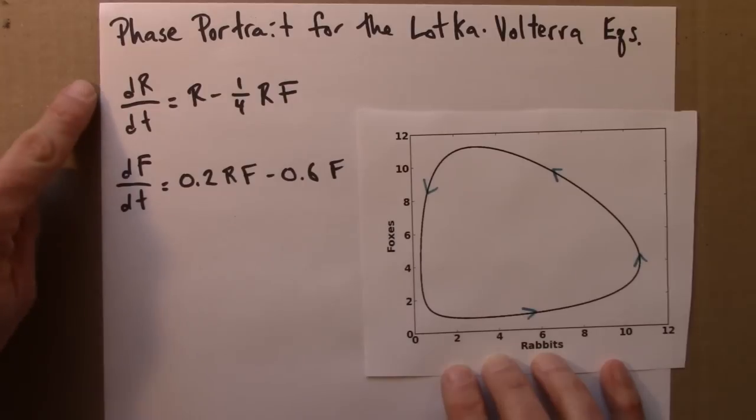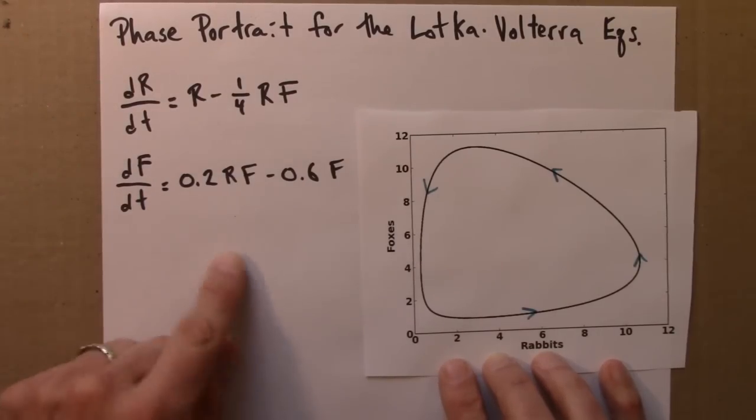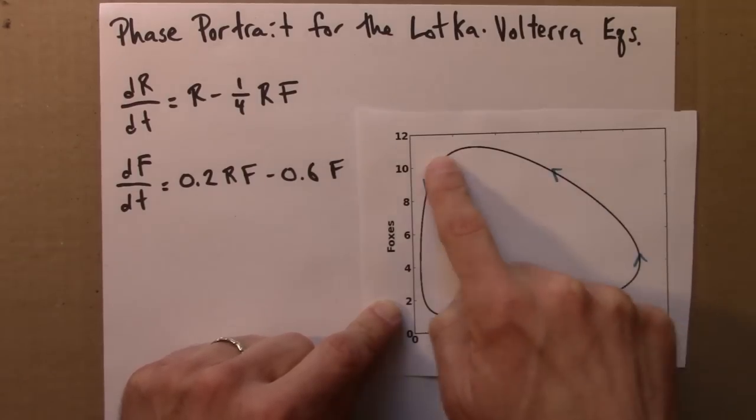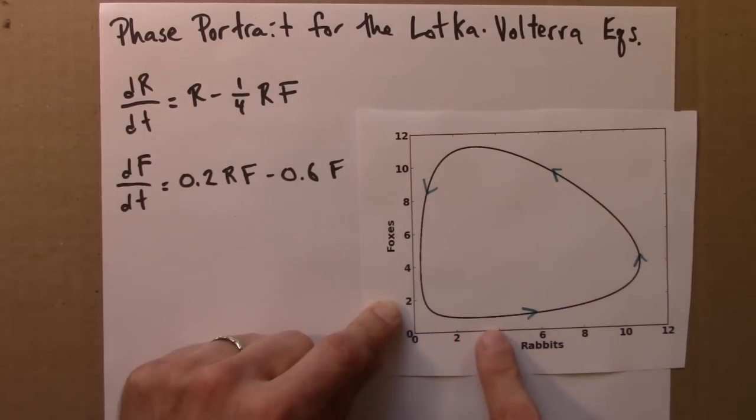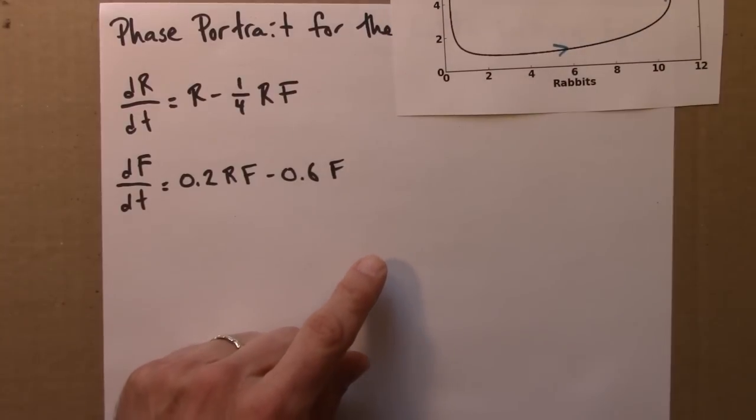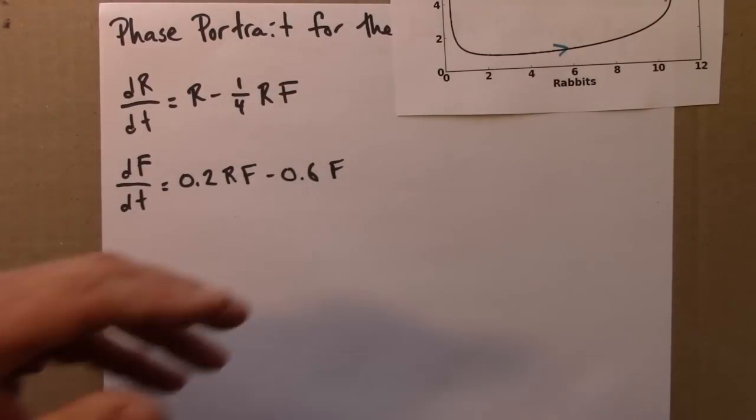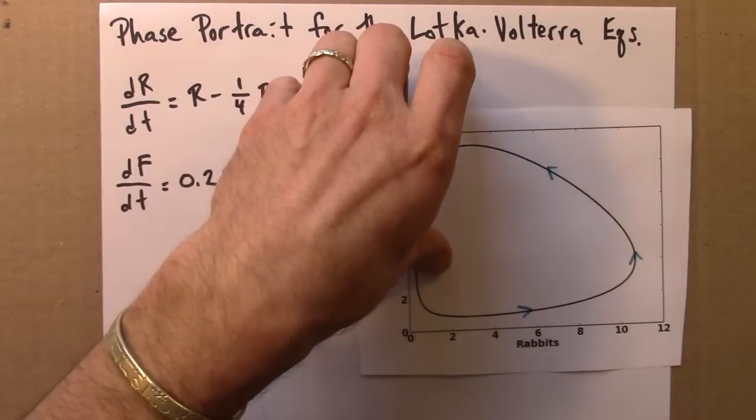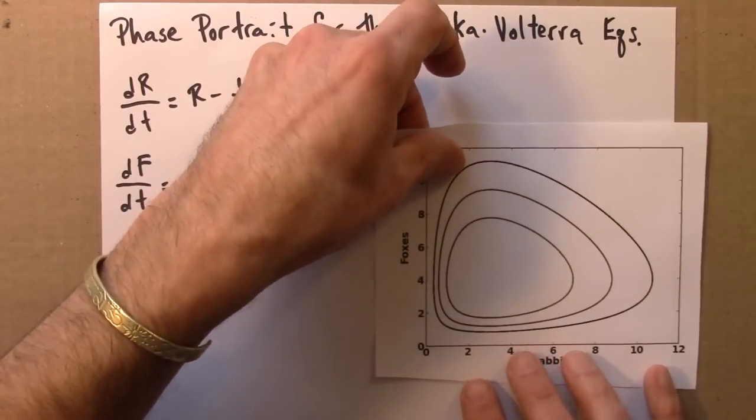So here's the Lotka-Volterra equations, the version we looked at before. And we saw that for a certain initial condition, I think ten foxes, six rabbits maybe, we ended up with a cycle like this. So what happens if we try some different initial conditions? For each initial condition, I would get a rabbit curve and a fox curve and then I could plot them together like I did here. And if I did that, we would end up with this.